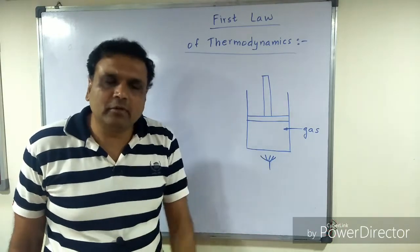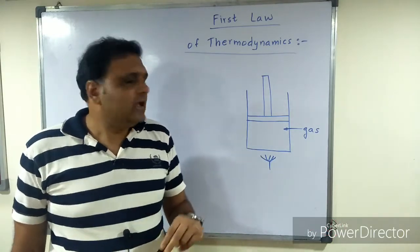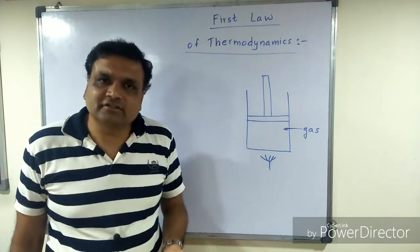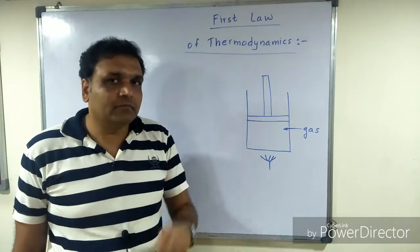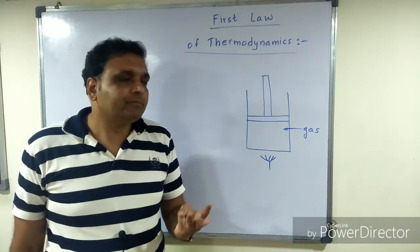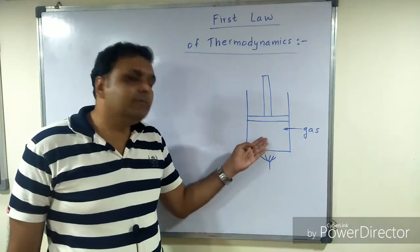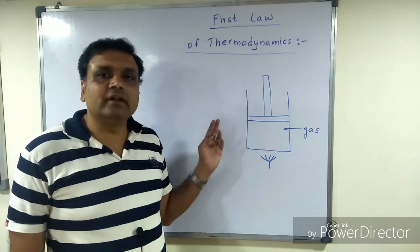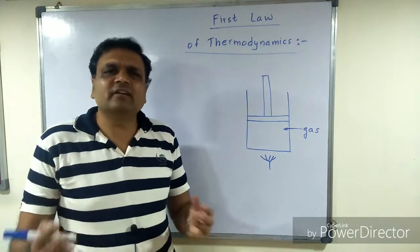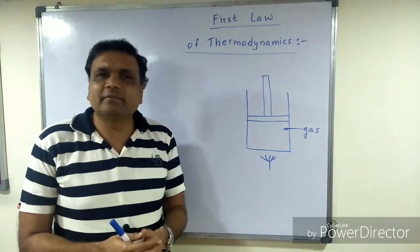Statement number two: if energy in one form disappears, then equivalent energy in some other form appears. Statement number three: the total amount of energy in system and surroundings remains the same. These are a variety of statements - multiple statements are possible. All of them are the first law of thermodynamics, basically the law of conservation of energy.